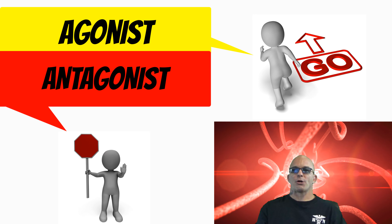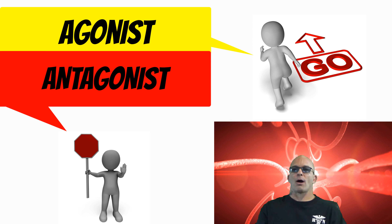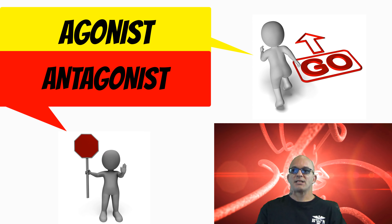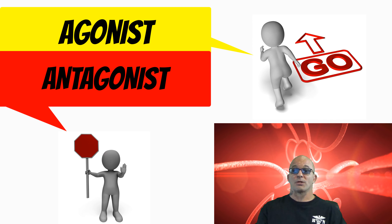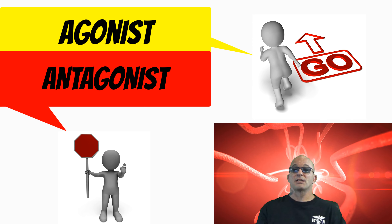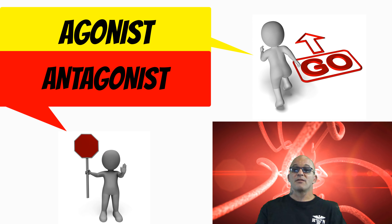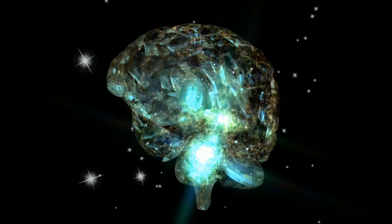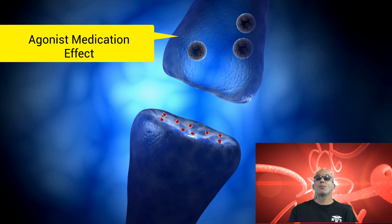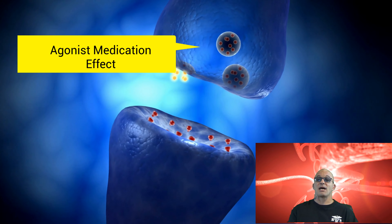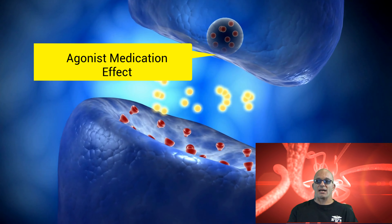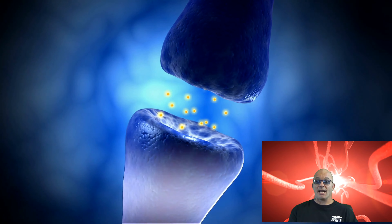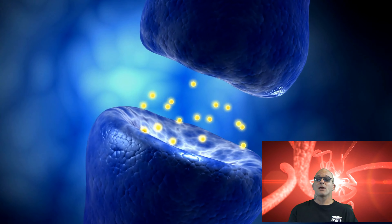Two important terms to open this lecture with are agonist and antagonist. An agonist is a substance which initiates a physical response when combined with a receptor. An antagonist is a substance that interferes with or inhibits the physiological action of another. In pharmacology, we utilize agonist-type medications to initiate an action on a receptor to stimulate its effects, and we utilize antagonist-type medications to prevent stimulation of an action.